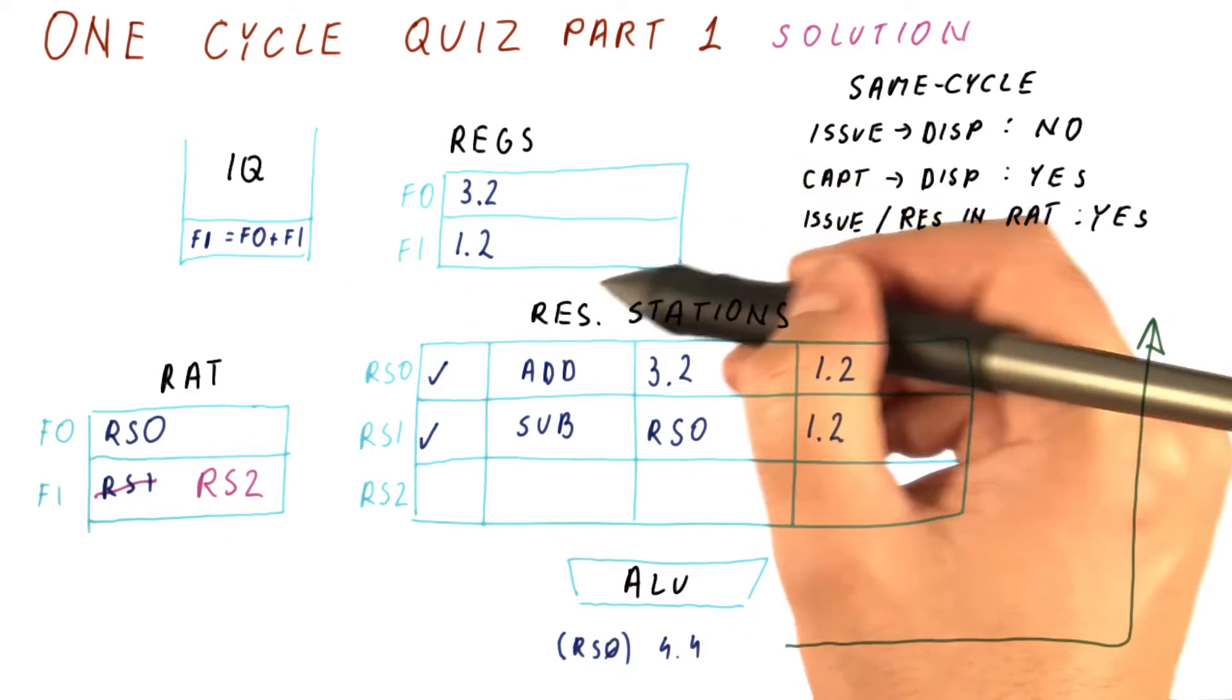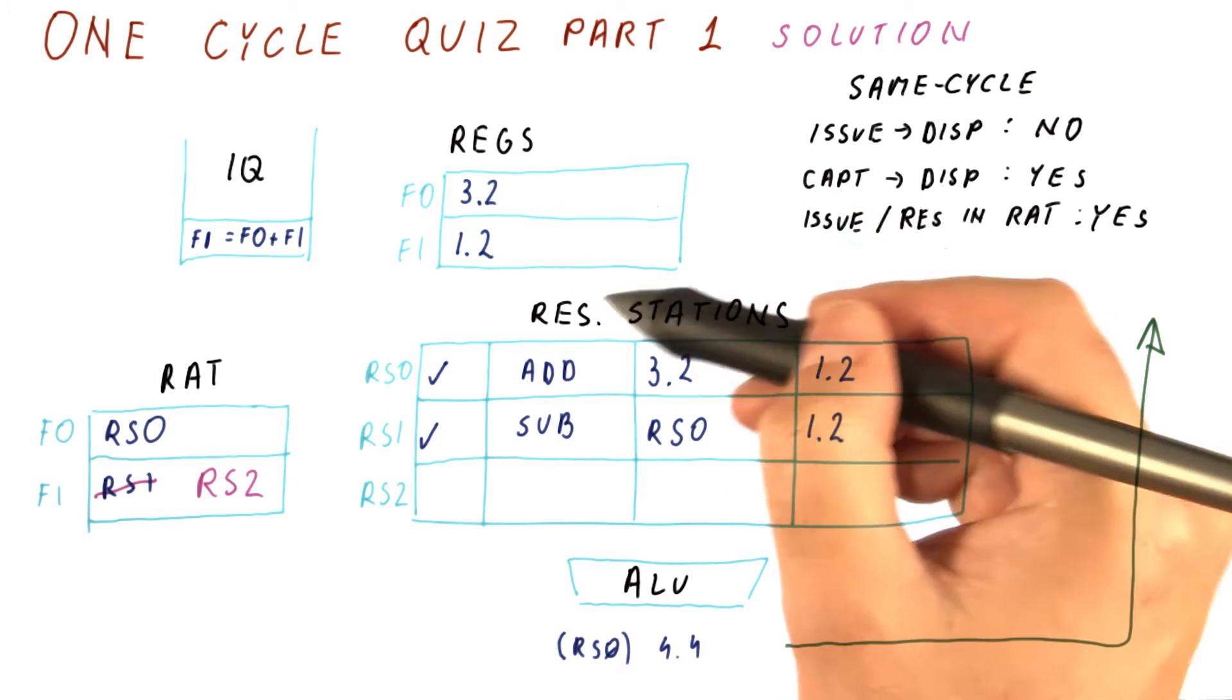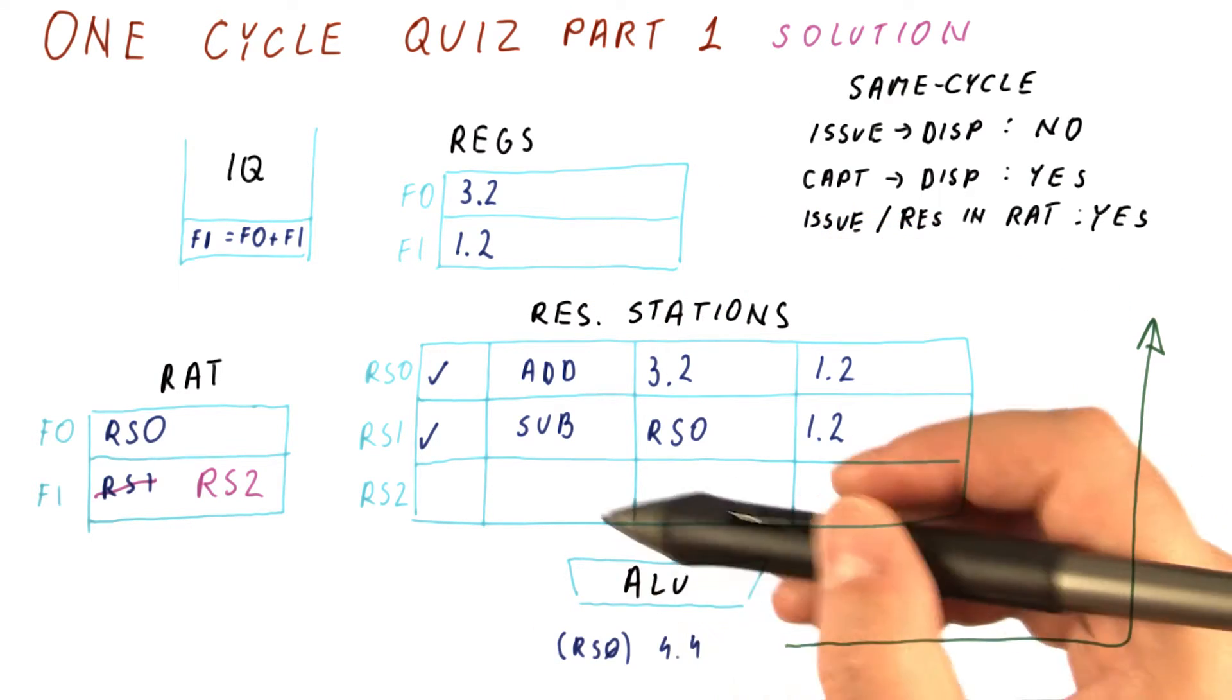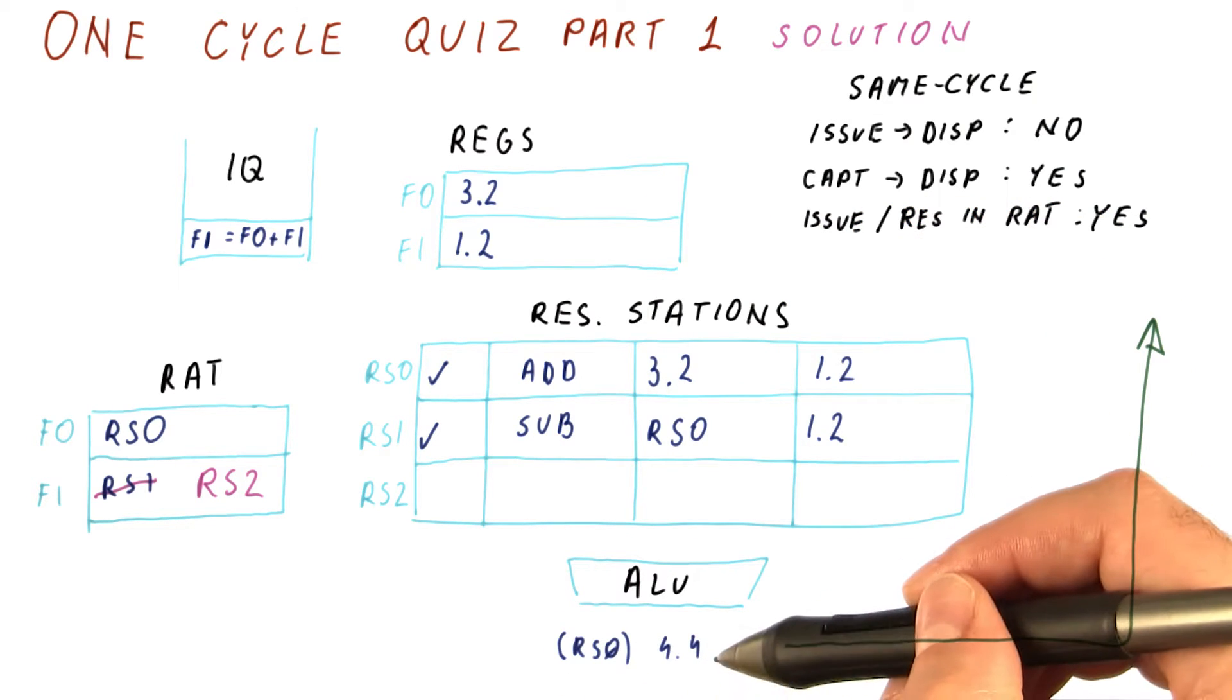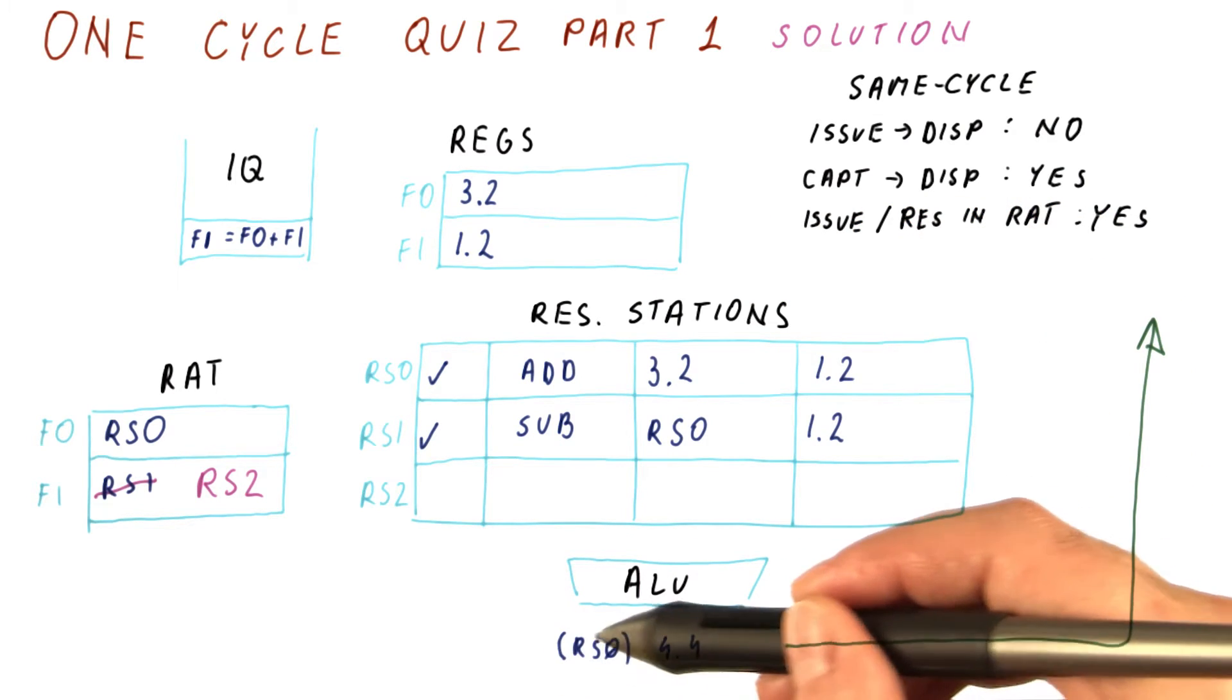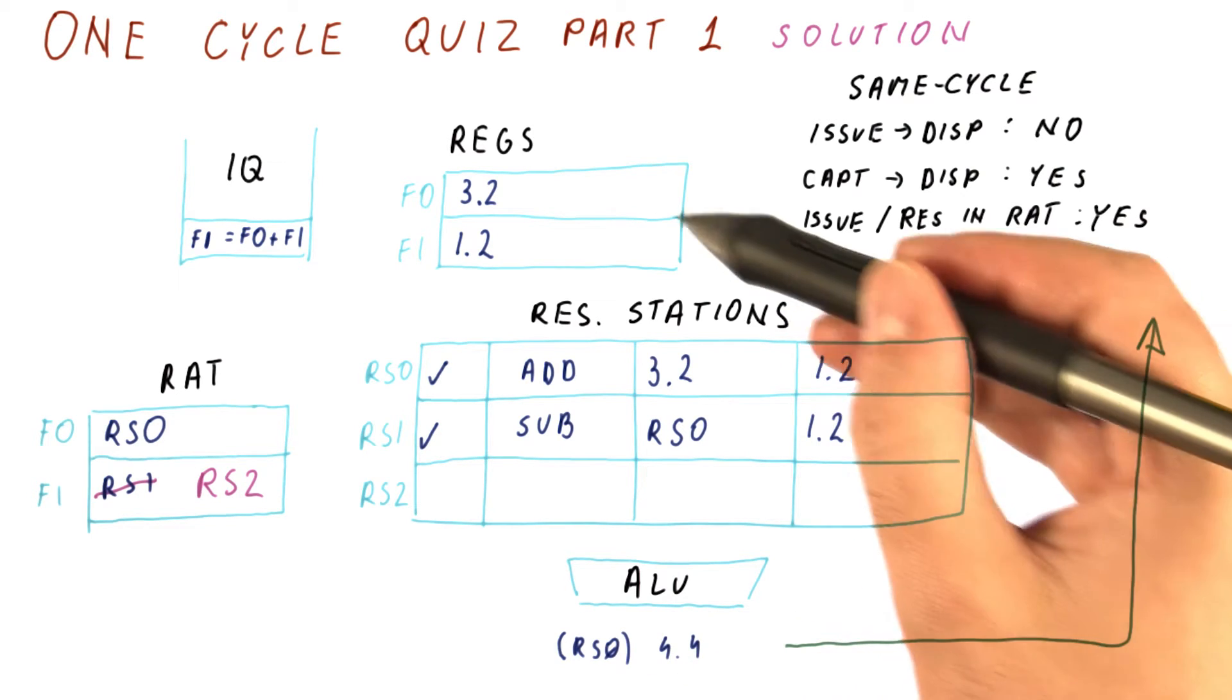The registers are not updated when we issue an instruction, so they stay the same for now. The broadcast of the result might update both the RAT and the registers. Let's first see what happens to the RAT. We're broadcasting that RS0 is now 4.4, and that will be written to registers.